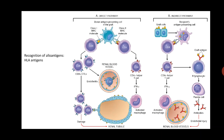In the indirect pathway, the recipient's antigen presenting cells activate the host T cells — usually CD4 positive helper T cells — which then activate B cells to produce plasma cells. Plasma cells produce immunoglobulins or antibodies directed against the HLA antigens of the grafted cells. These antibodies bind to the endothelium of blood vessels within the graft and cause destruction or rejection.